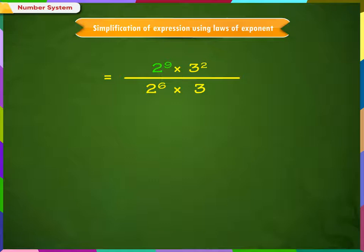Again, as per the second law of exponent, we know that in case of division, if bases are same, then exponents can be subtracted. Therefore, 2 raised to 9 by 2 raised to 6 becomes 2 raised to 9 minus 6, that is 2 raised to 3.